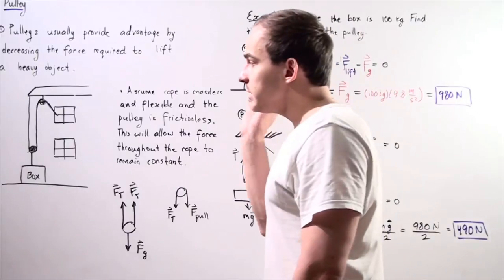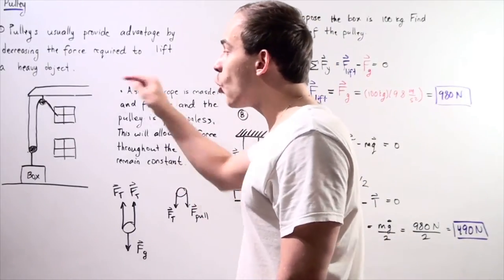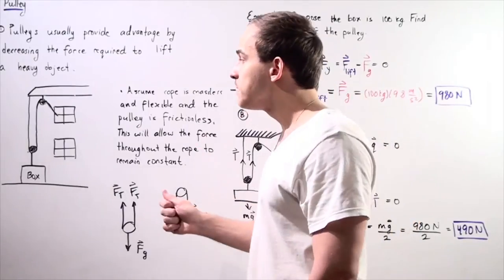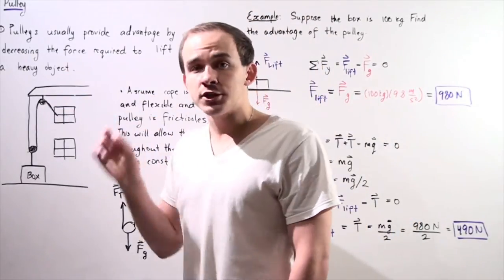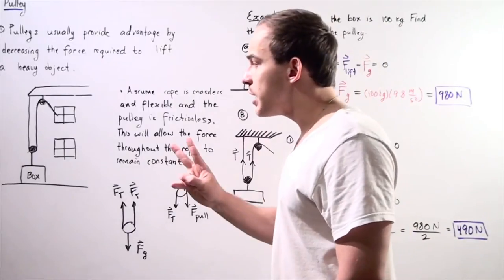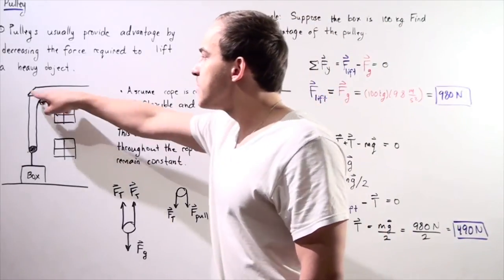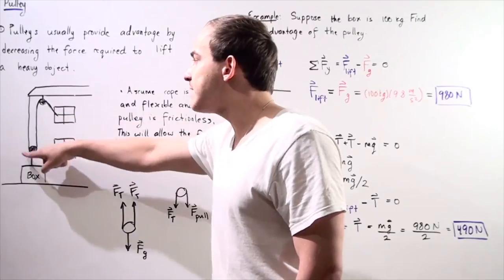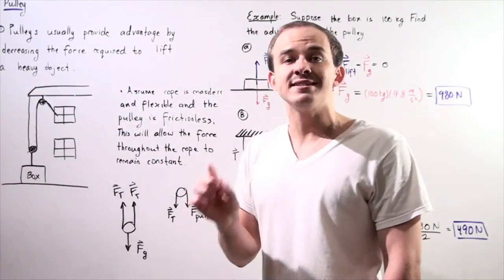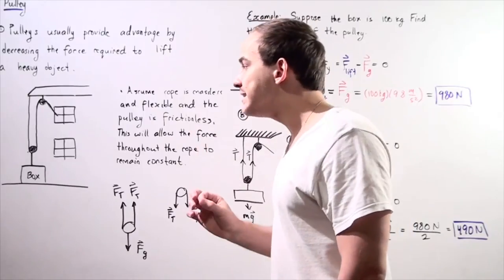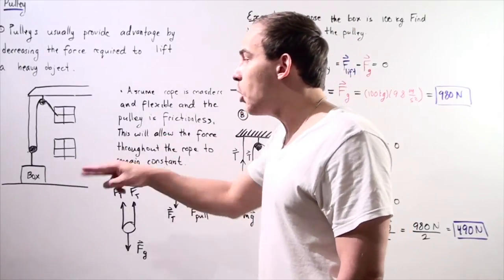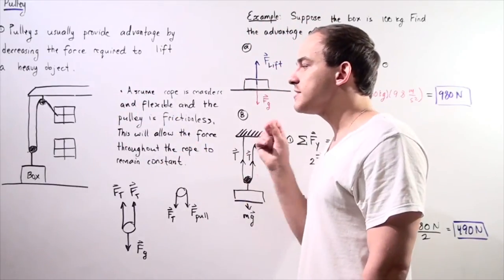We normally make the assumption that our cord is both massless and flexible, and our pulleys are frictionless. By making this assumption, we're doing two things: we're assuming that the force at any given point along our cord is exactly the same — it remains undiminished.